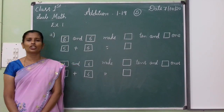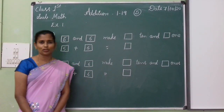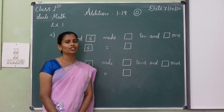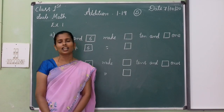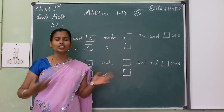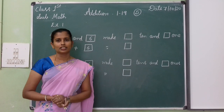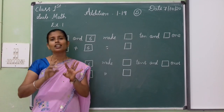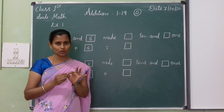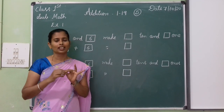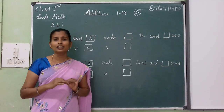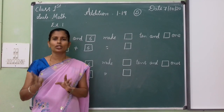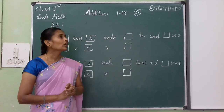Good morning children. How are you all? In last class we learned some shapes and patterns. The four important shapes are rectangle, square, triangle and circle. These four are important shapes.